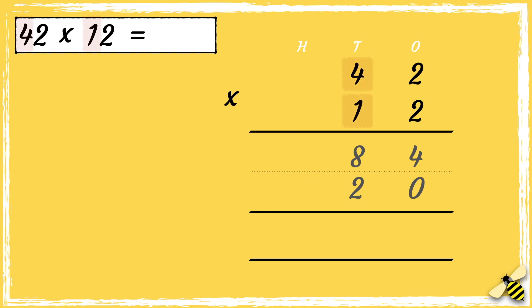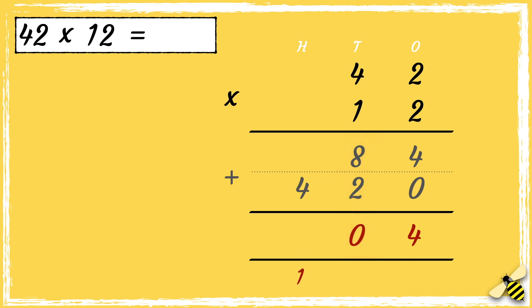The next step is to add the two answers together. Four add zero is four. Eight tens add two tens is ten tens — we can carry the ten tens over to the hundreds column to make one hundred. Then four hundreds add one hundred is five hundreds, so the answer is five hundred and four.